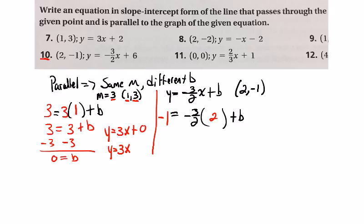Then we go ahead and work this out to solve. So negative three over two times two, these cancel each other out, correct? So we get negative one equals negative three plus b. And we add three to both sides. And we get b equals two.